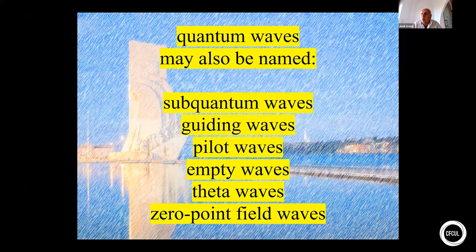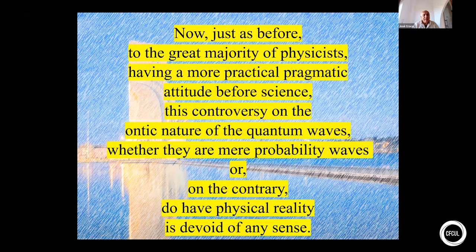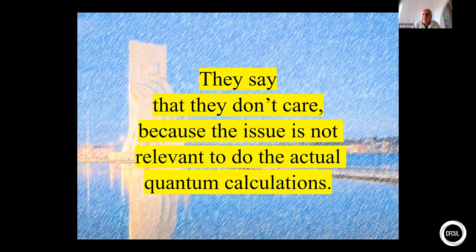De Broglie and the non-linear causal schools sustained that waves stand for description of something with real physical existence. Quantum waves may also be named sub-quantum waves because there can be quantum waves without a particle or singularity. They can also be named guiding waves, pilot waves, empty waves, zeta waves, zero-point waves. There are many names for the quantum waves. What is important is that now, just as before, to the great majority of physicists having a more practical, pragmatic attitude toward science, this controversy on the ontic nature of the quantum waves, whether they are merely probability waves or on the contrary have real physical reality, is devoid of any sense.